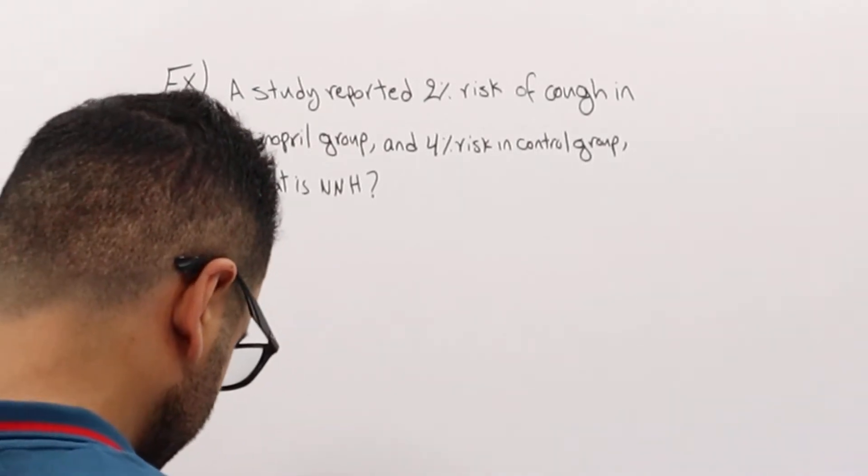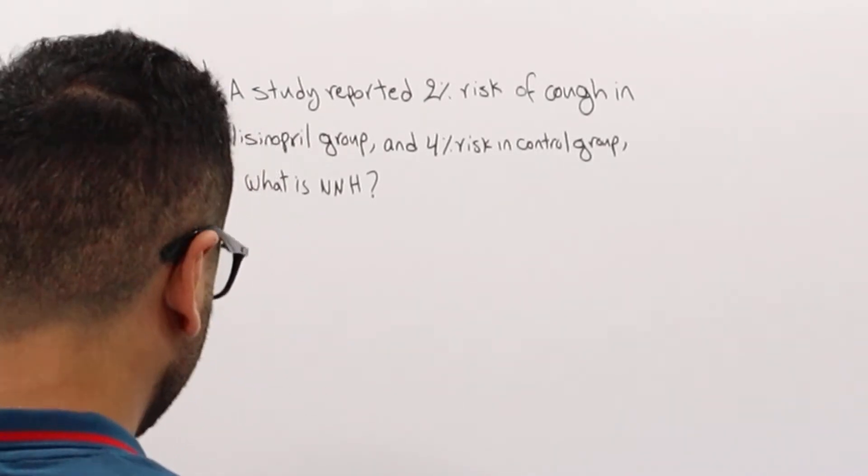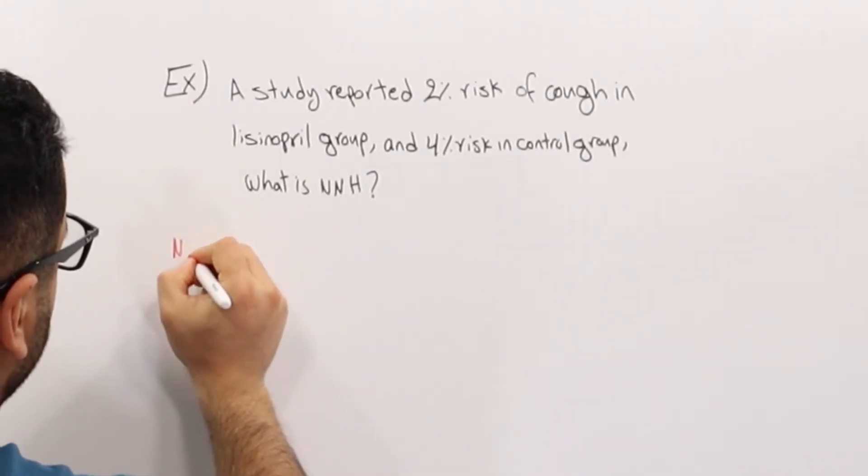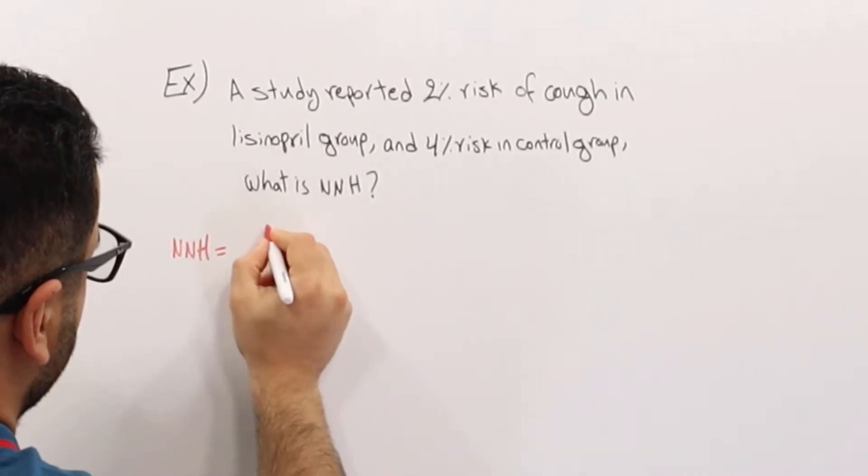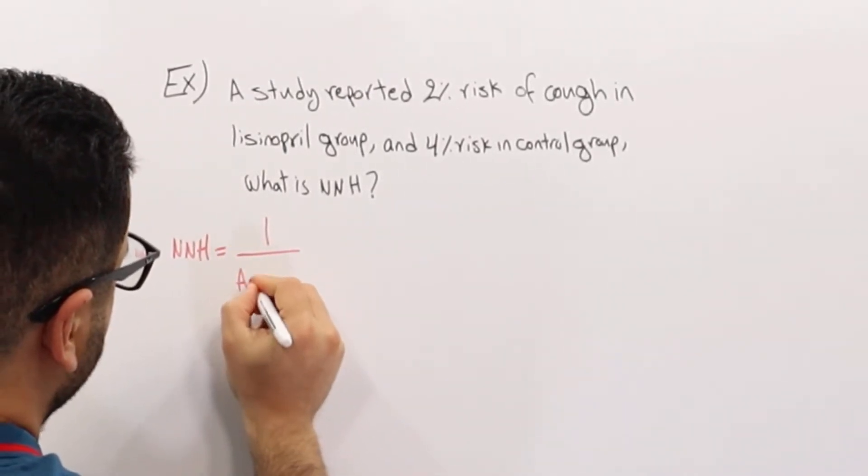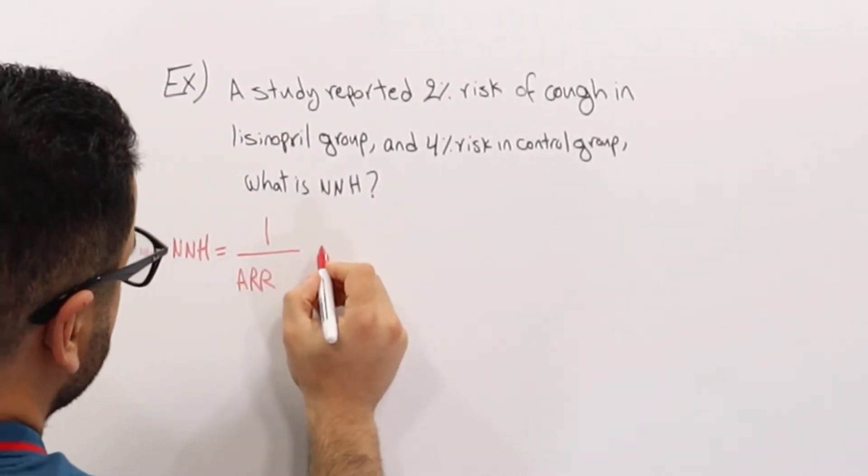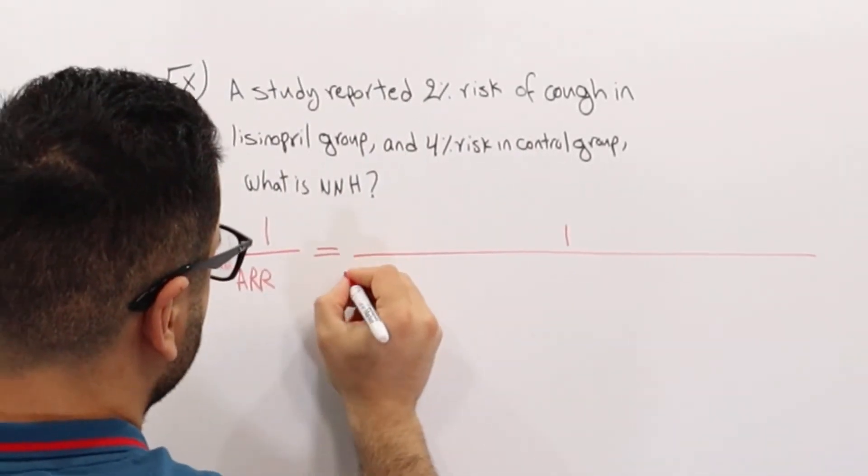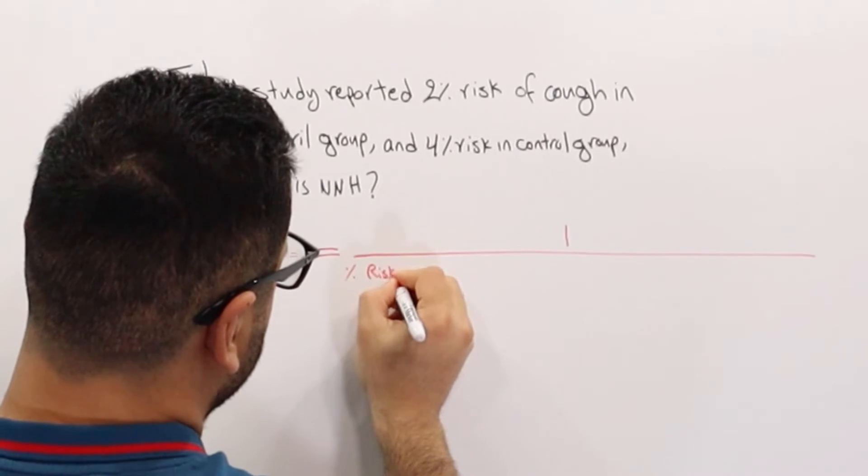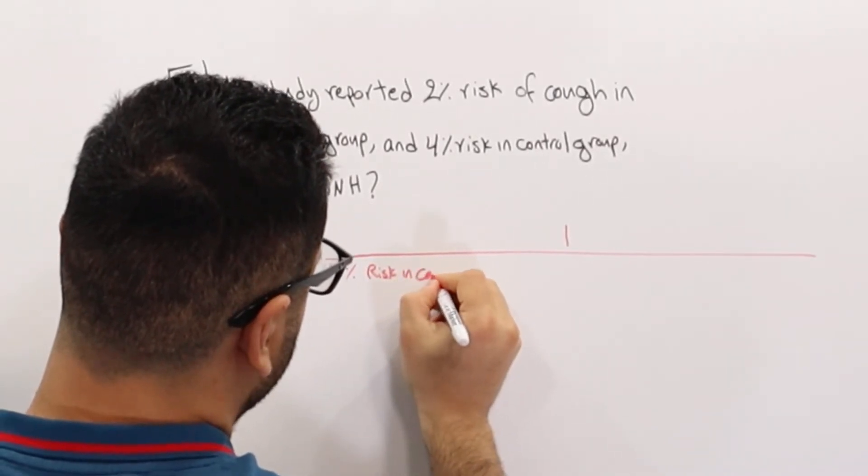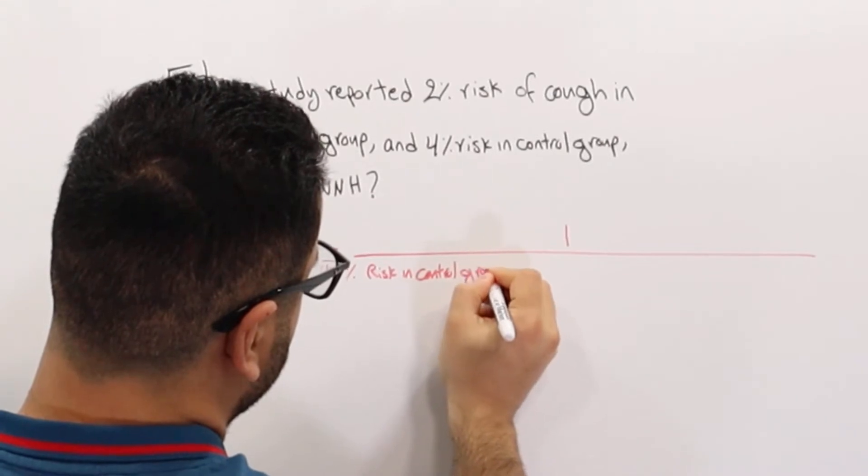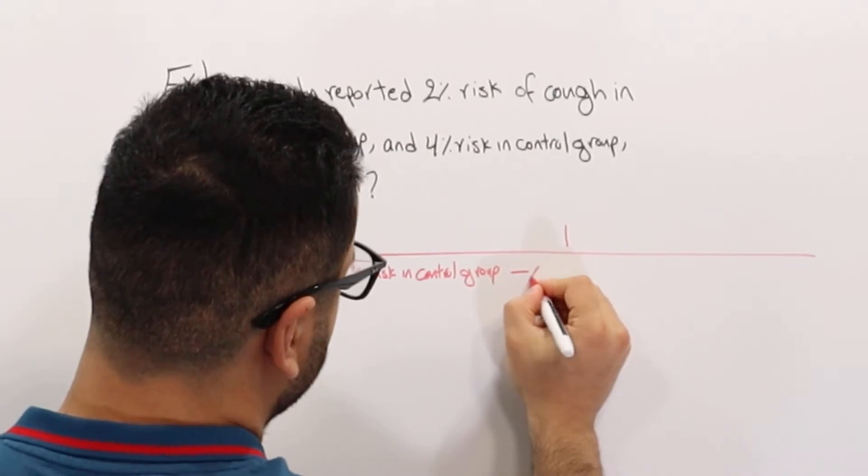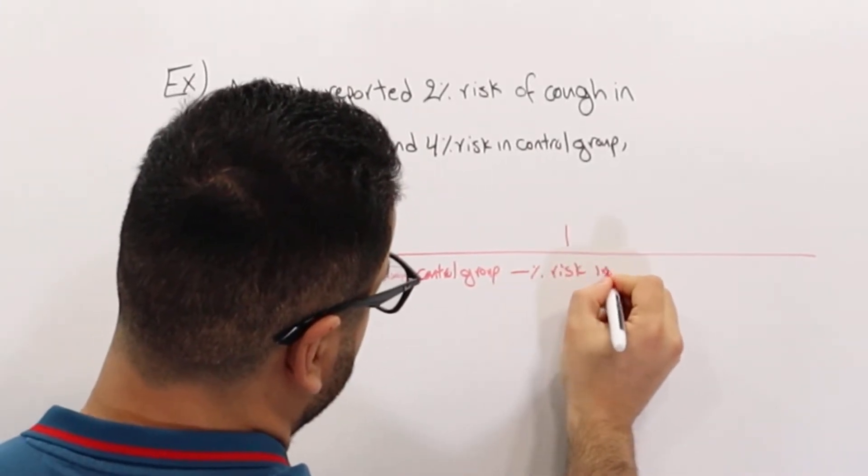First of all, number needed to harm has an equation. Number needed to harm is 1 over absolute risk reduction. Another way, this can be 1 over percent risk in control group minus percent risk in the treatment group.